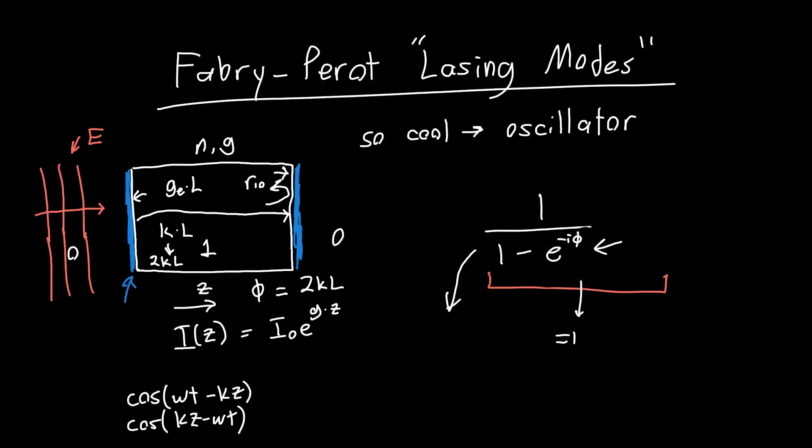This is what your denominator now looks like. And this only becomes infinite when the denominator is equal to 0, or when e to the minus i phi is equal to 1, or when phi is a multiple of 2 pi. So 2 pi times some integer.